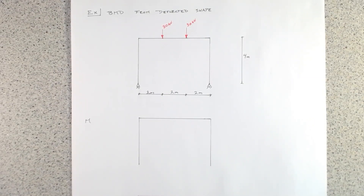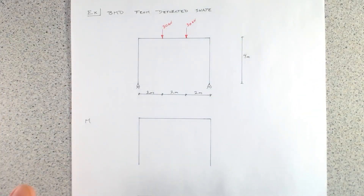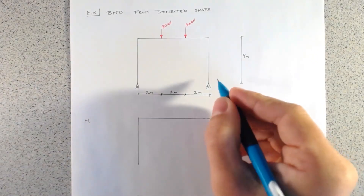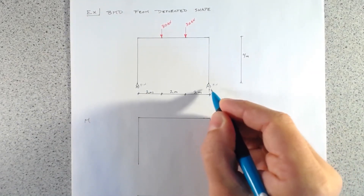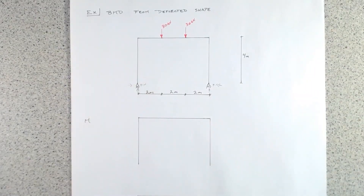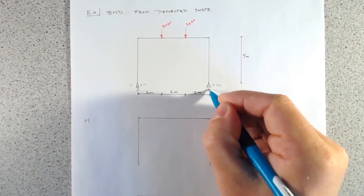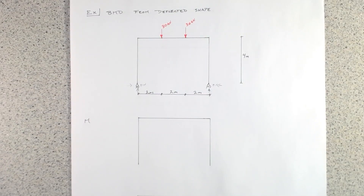This is really useful for an indeterminate structure where we have more unknowns than equations of static equilibrium. With two pins at the base — each pin potentially having both a vertical and horizontal reaction force — we've got four unknowns and only three equations of equilibrium.